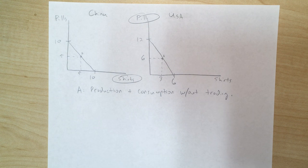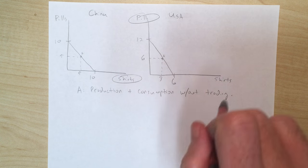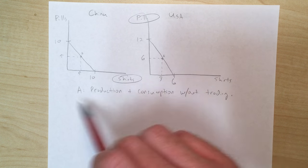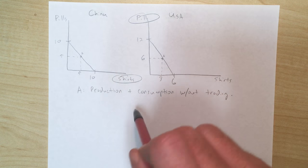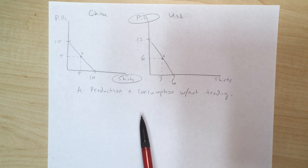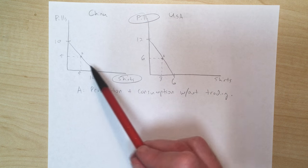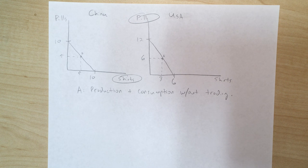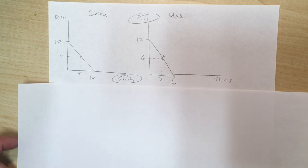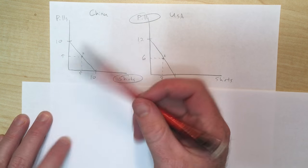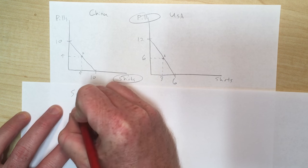If we're going to figure out what they could do by trading, they're not just going to keep producing the same amount as when they're isolationists. If they're going to trade, they'll want to produce more of the good they're trading away — so China will produce more shirts and the US will produce more pills. There's a name for this sort of activity, which I'll write in your notes now.